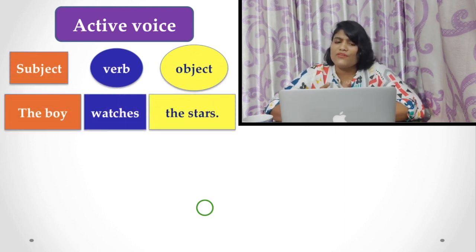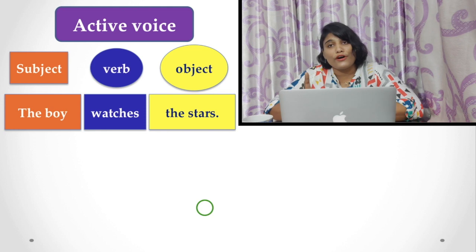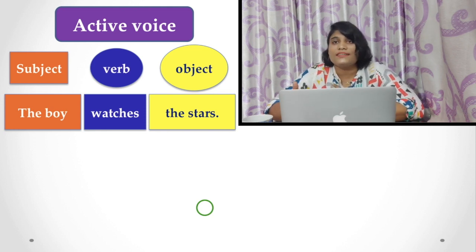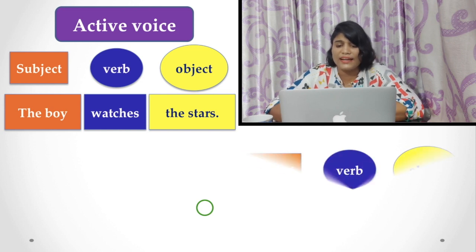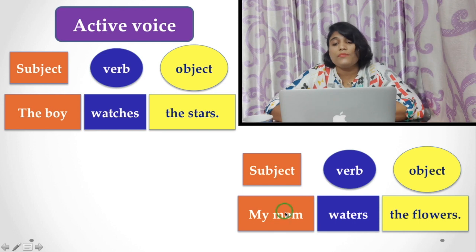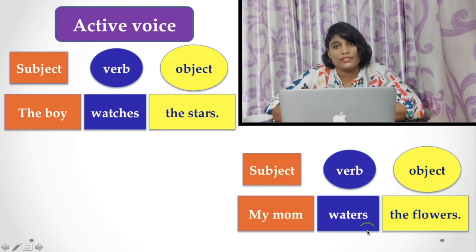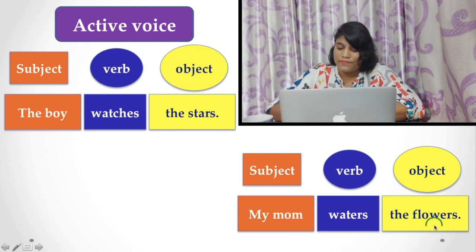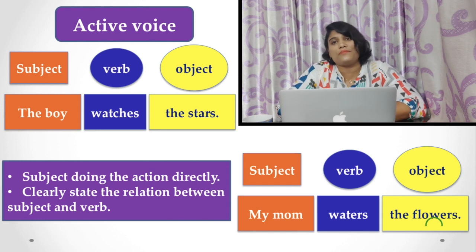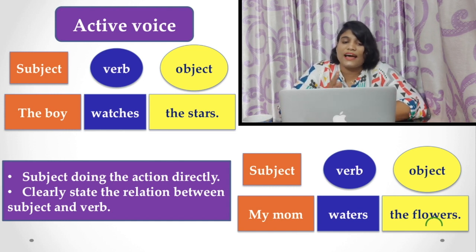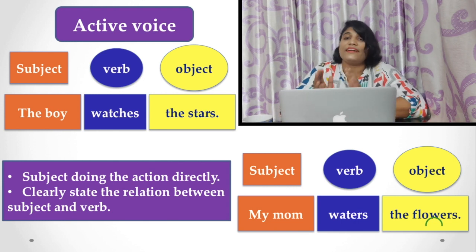What is the active voice? Notice the example. The boy watches the star. In this sentence, you find subject — the boy — verb 'watches,' and the object is the star. And in the second sentence, my mom waters the flower. Here the subject is my mom, verb is waters, and object is the flowers. In these two examples, what the subject does has been stated very clearly. The subject is doing the action directly, and the relation between verb and subject is very clear.